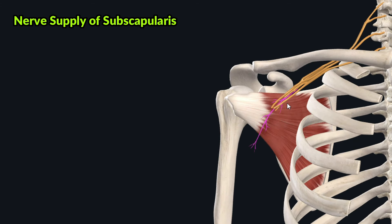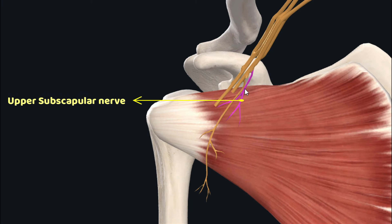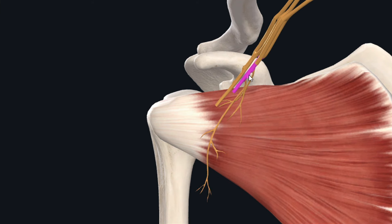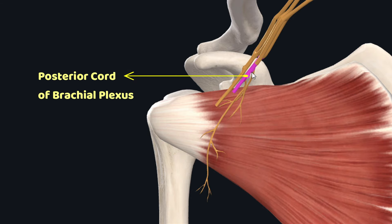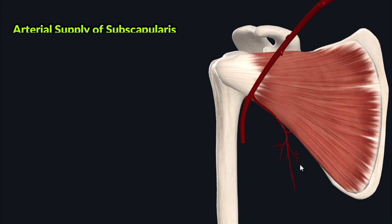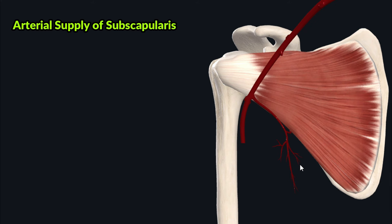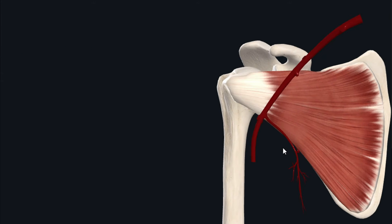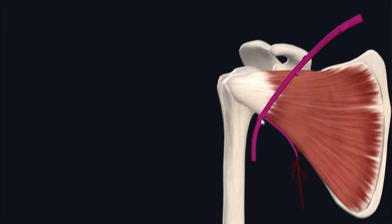The subscapularis is supplied by the upper and lower subscapular nerves, both arising from the posterior cord of the brachial plexus: the upper supplies the superior fibers and the lower supplies the inferior fibers. Its arterial supply comes from the thoracodorsal artery and the circumflex scapular artery, both arising from the subscapular artery, which itself arises from the third part of the axillary artery.